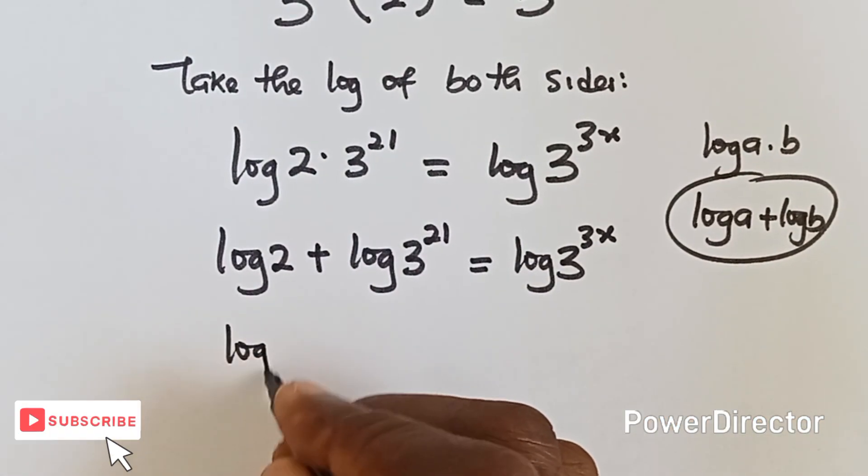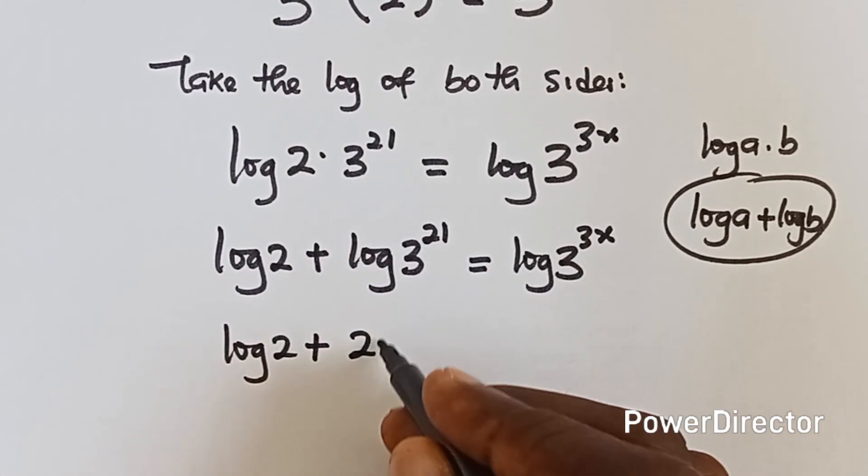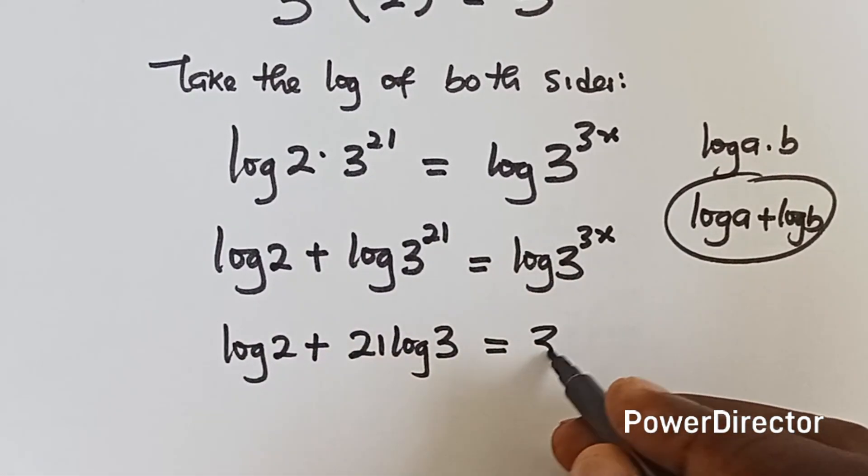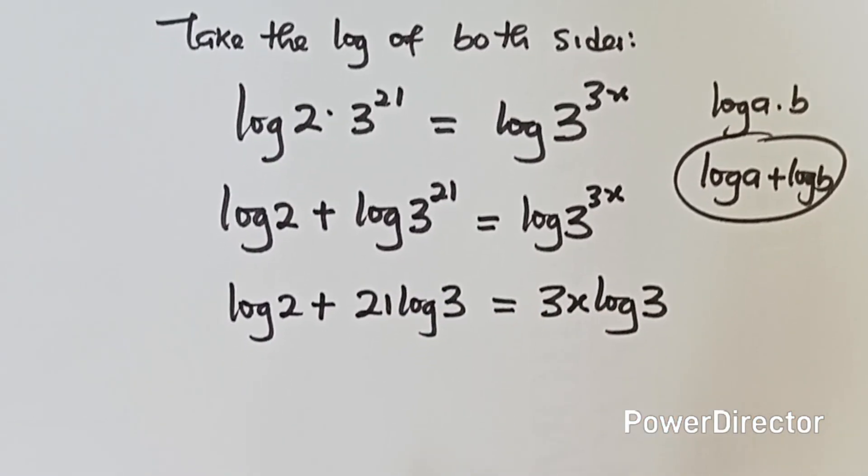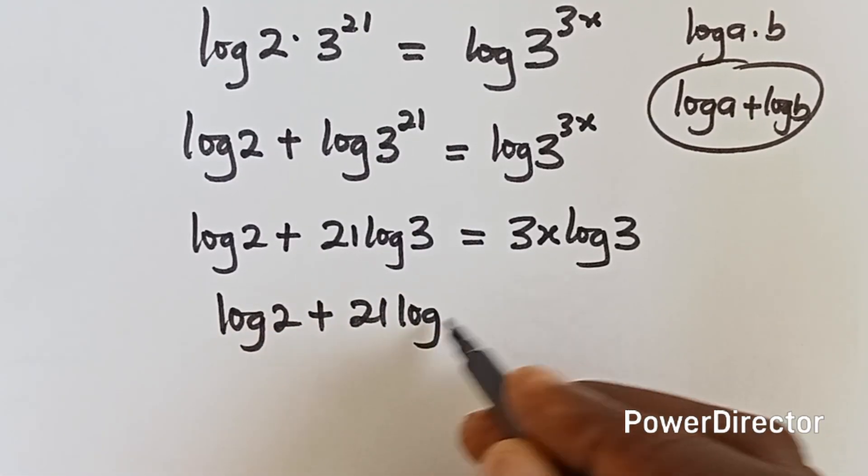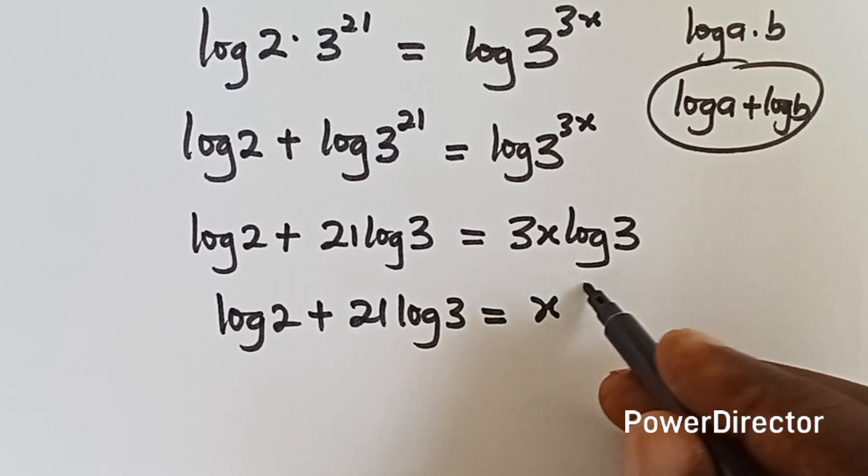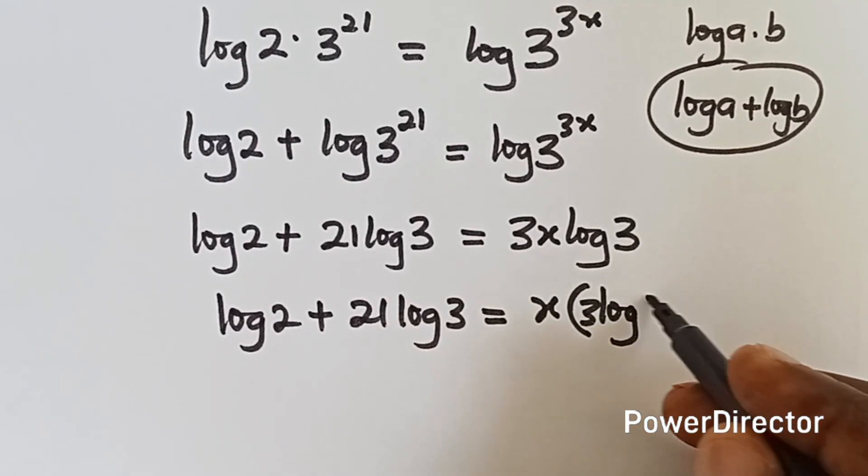Then we have log 3 raised to power 3x. All right, so now log 2 plus this 21 will come to the back, it becomes 21 log 3 equals to these two, we have 3x log 3. All right, let's write log 2 plus 21 log 3 equals to, then the x can be written outside. So we have 3 log 3.